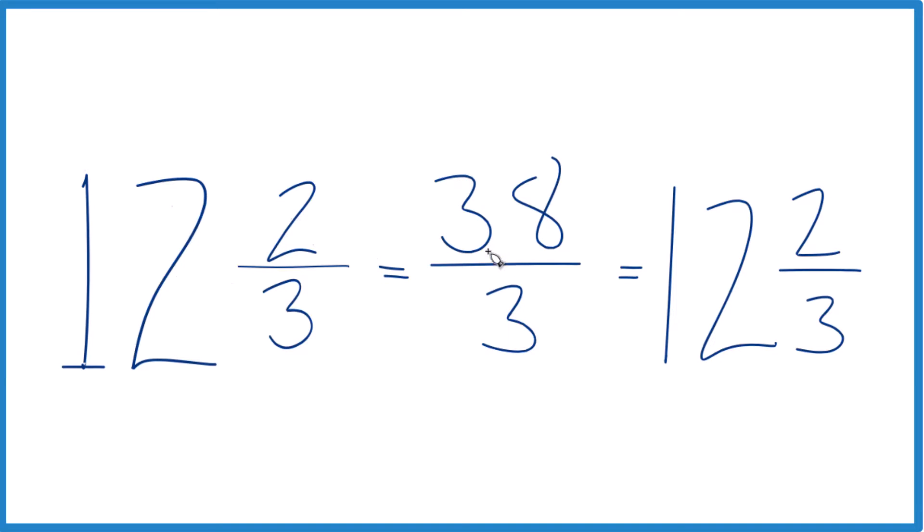And these numbers, they're equivalent here. 12 and 2 thirds equals 38 thirds. They have the same value, just that we've written this here as an improper fraction, just in a different format.